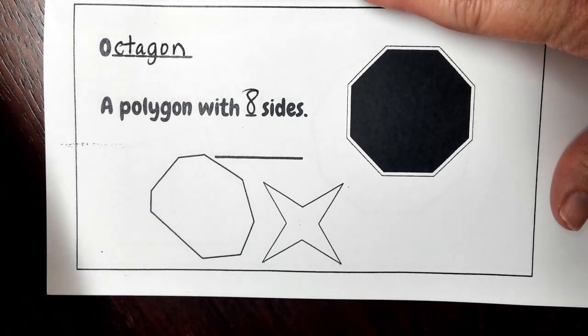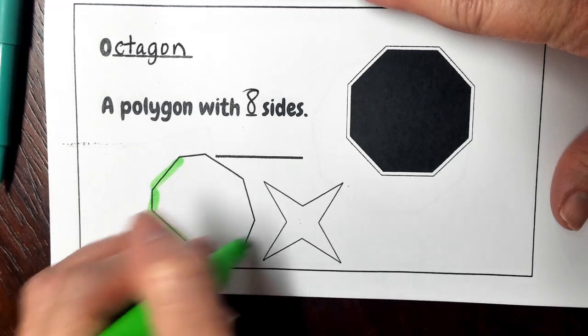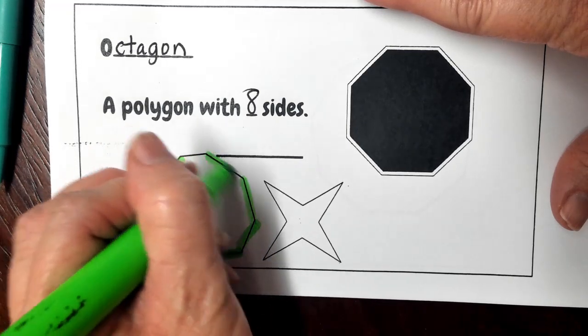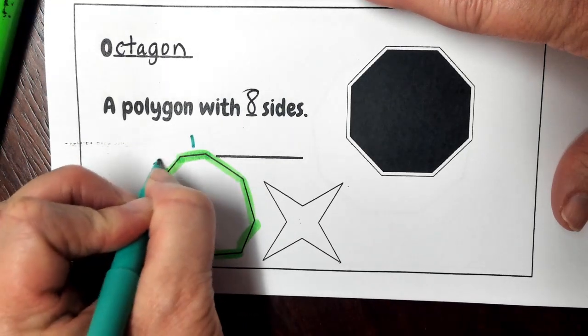So that could be any eight sided figure, so 1, 2, 3, 4, 5, 6, 7, 8, and remember when we're counting, we're just counting those line segments.